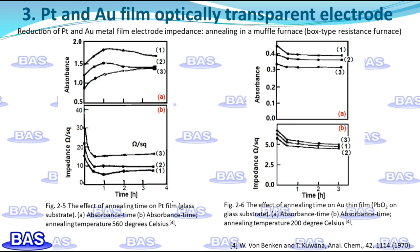This annealing process may cause the discontinuous metal islands on the substrate surface to condense into a more continuous metal film, which reduces resistance and improves mechanical adhesion and light transmittance, especially for gold films. Figure 2-5 shows the effect of annealing time on platinum film — the impedance decreases sharply at the beginning and reaches a normal value after one hour. In most cases, the impedance decreased about 55% to 66%, and the transmittance of the film gradually decreases with annealing time.